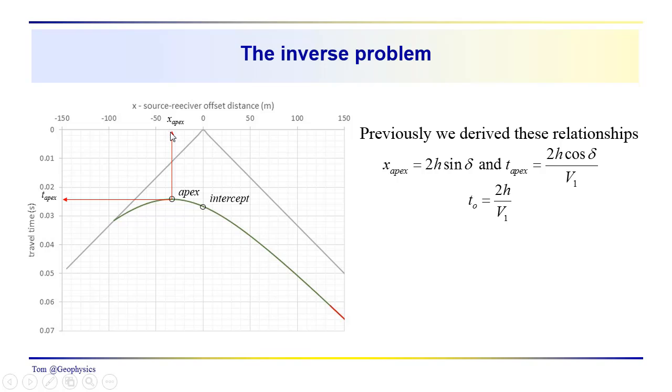And you can see how I've picked them here. I get about 33 for the apex, 33 meters, and about 0.024 seconds for t apex. For the intercept time, I'm coming in around 0.0265 or so.